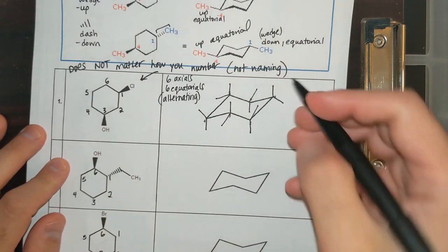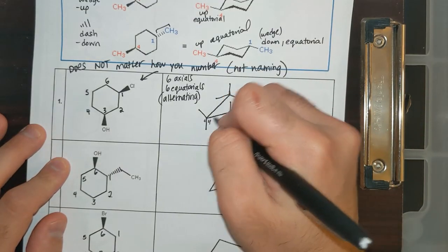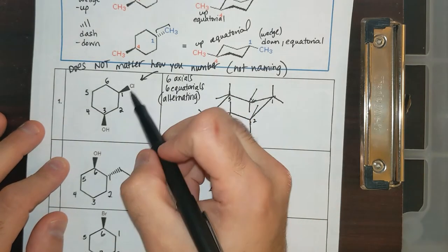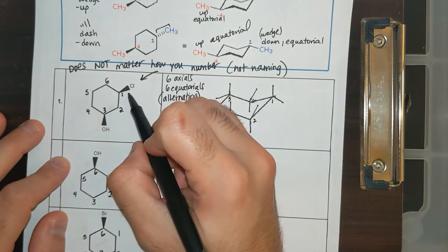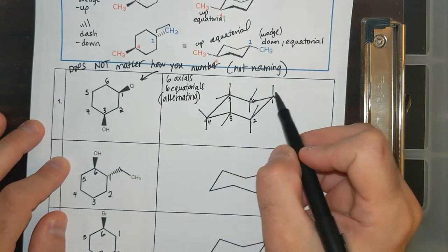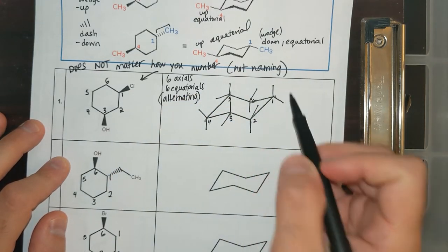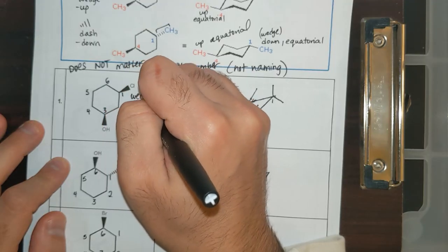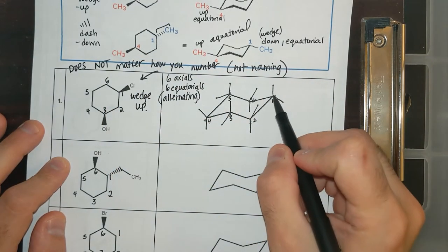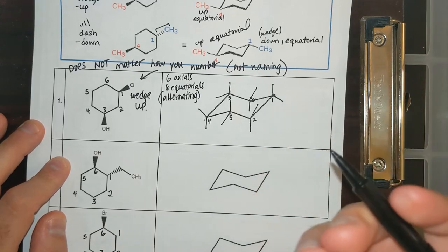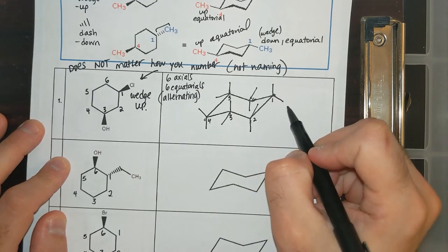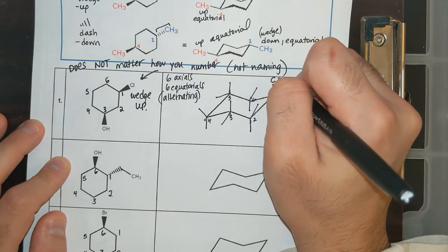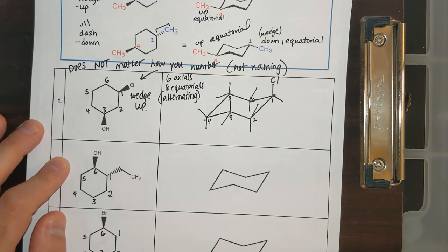I've already numbered these one through six. Now all that's left is putting substituents in the appropriate positions. This CL is on carbon one — the wedge means it's got to be up. If I look at carbon one, I have to find which substituent is up: the equatorial is down, the axial is up. So CL is up in the axial position.